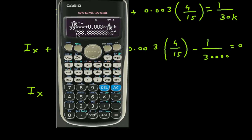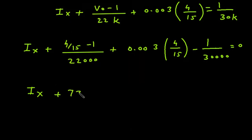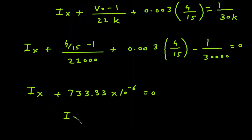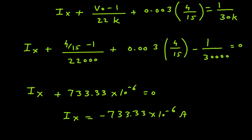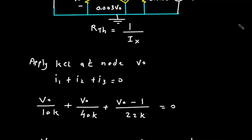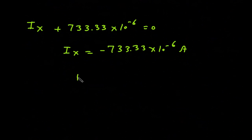Solving this gives 733.33 plus 733.33 into 10 raised to the power minus 6 equal to 0. Therefore Ix equals minus 733.33 into 10 raised to the power minus 6 ampere. This is the value of Ix. RTH is equal to 1 by Ix, so RTH equals 1 upon minus 733.33 microampere, giving RTH equals minus 1363.63 ohm.